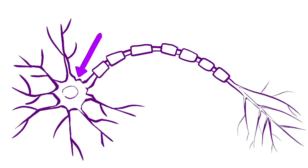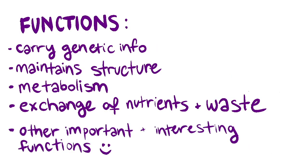As we follow the electric impulse down the neuron, we reach our next destination: the soma. Also known as the body, the soma doesn't actually play a role in signal transmission. It works to maintain homeostasis within the cell and keeps it functional with all the organelles and such. But that's boring, so moving on!